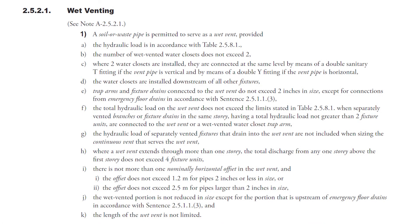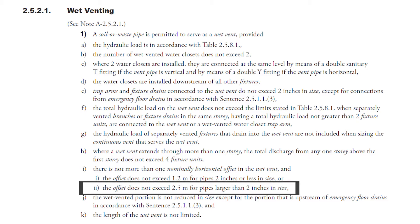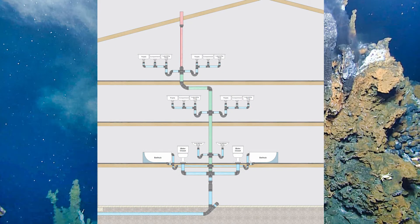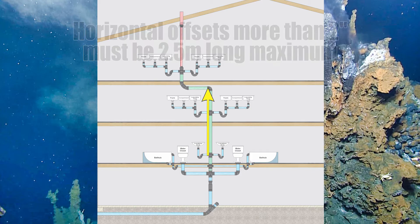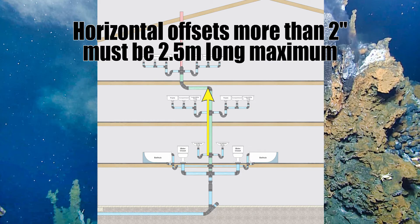The clause goes further to say the offset does not exceed 2.5 meters for pipes larger than two inches in size. Looking at this diagram, we have the same system sized earlier with a four-inch wet vent, but now with an offset in it. This clause tells me this offset is a maximum of 2.5 meters long from this point all the way over to here.